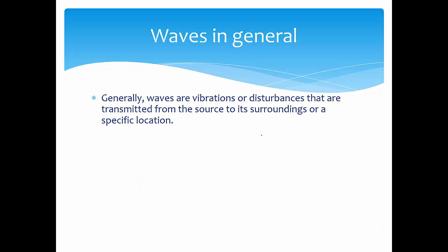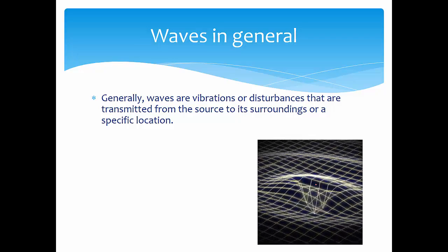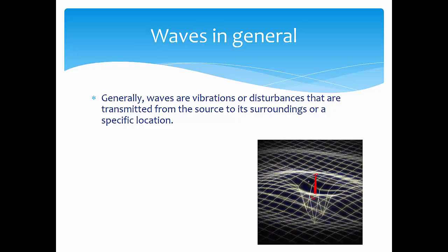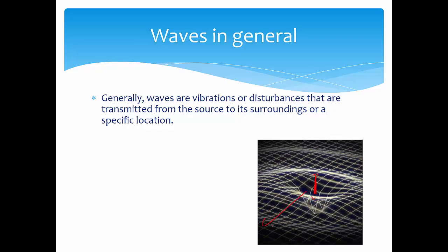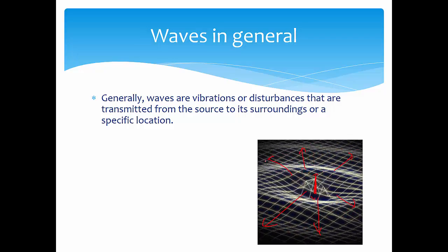Generally, waves are vibrations or disturbances that are transmitted from the source to its surrounding or specific location. You find that there will be a disturbance that moves, or vibration that moves up and down in this case, and the disturbance will be transmitted outwards to its surrounding or maybe a specific destination.